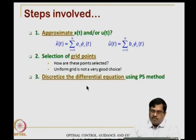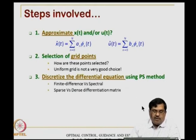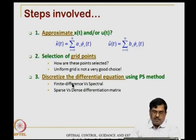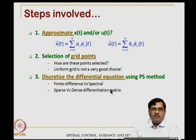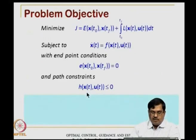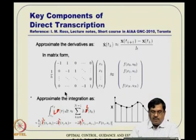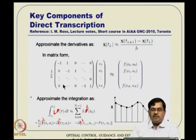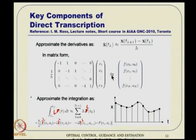The pseudo-spectral method discretizes the differential equation spectrally. Instead of a large-dimensional sparse matrix from finite differences, you look for a small-dimensional dense differentiation matrix. This differentiation matrix D is what we defined in the matrix form earlier. Instead of a large sparse differentiation matrix, what you want is a smaller dense matrix that does a similar job. We also approximate the integral of the cost function using quadrature rules for better accuracy.